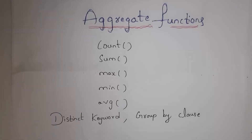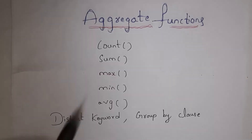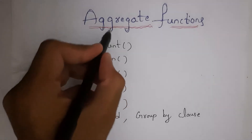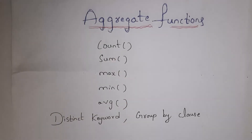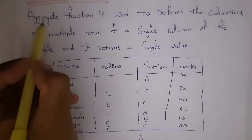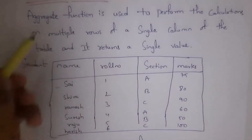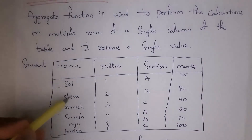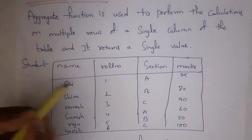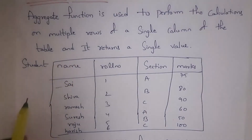I have uploaded complete DBMS subject tutorials — I will provide a link in the description. If you are watching this video for the first time, don't forget to like, share, and subscribe to my channel. Aggregate function is used to perform calculations on multiple rows of a single column of a table.